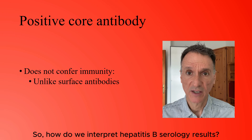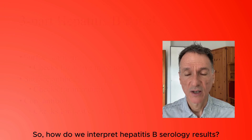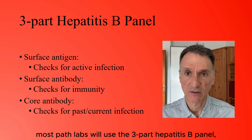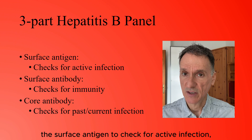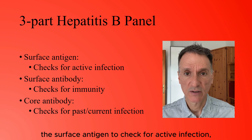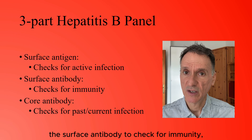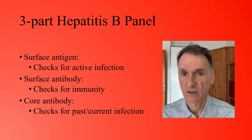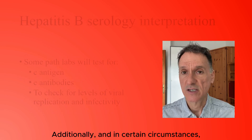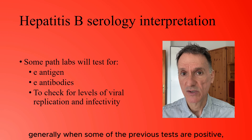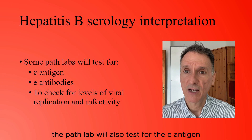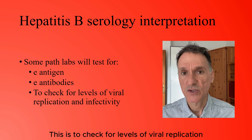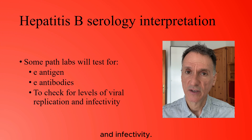How do we interpret hepatitis B serology results? Most path labs will use a three-part hepatitis B panel: testing for the surface antigen to check for active infection, the surface antibody to check for immunity, and the core antibody to check for past or current infection. Additionally, in certain circumstances — generally when some of the previous tests are positive — the path lab will also test for the E antigen and the E antibodies, to check for levels of viral replication and infectivity.